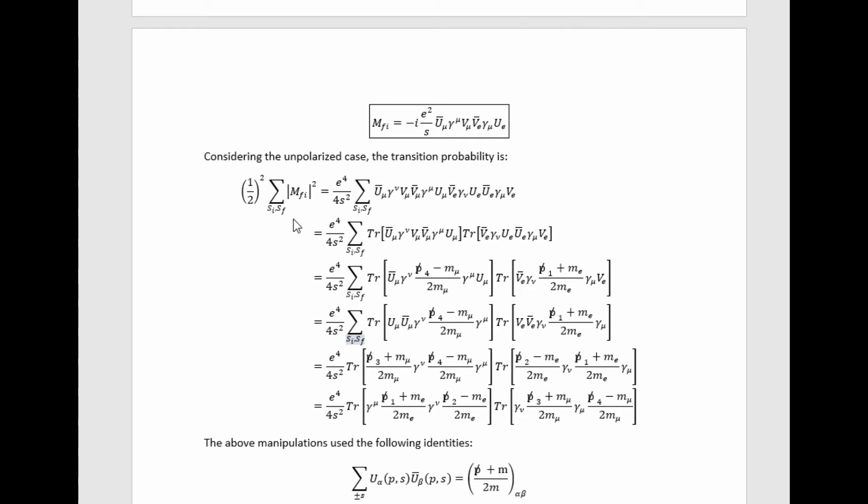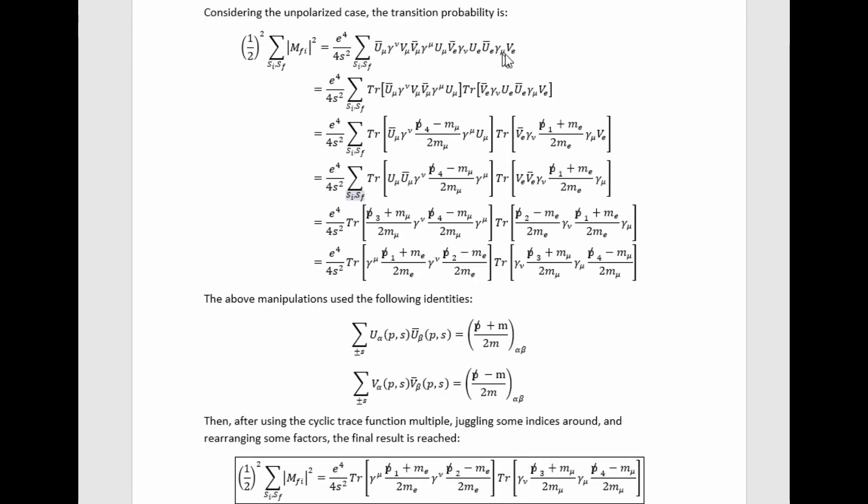Now we're summing over the final spins because this is the unpolarized cross section and we need to sum over all the possible output spins. And then we're averaging over the initial spins because this is the unpolarized cross section and we need to take into account that they may come in with random probability with either possible spin.